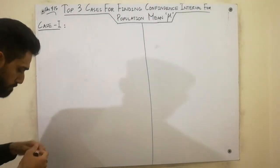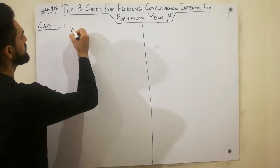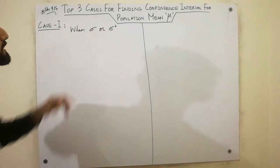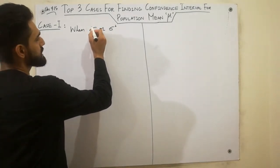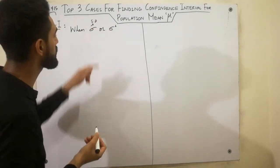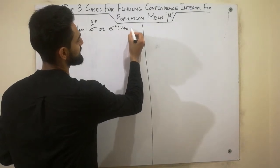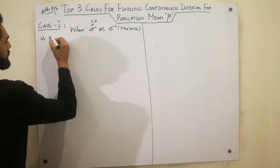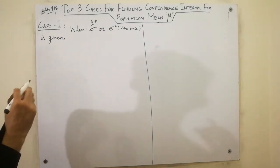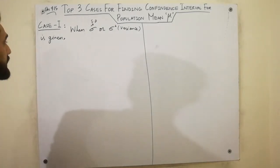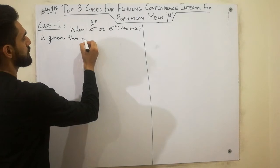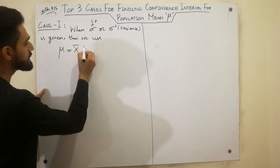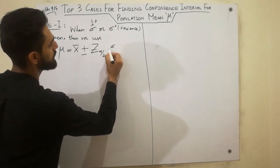The first case is a very simple case: when Sigma or Sigma squared is known. Sigma is the standard deviation and Sigma squared is the variance. When Sigma or Sigma squared is given, then we use the formula: mu equals X bar plus minus Z alpha by 2, multiplied by Sigma divided by root n.